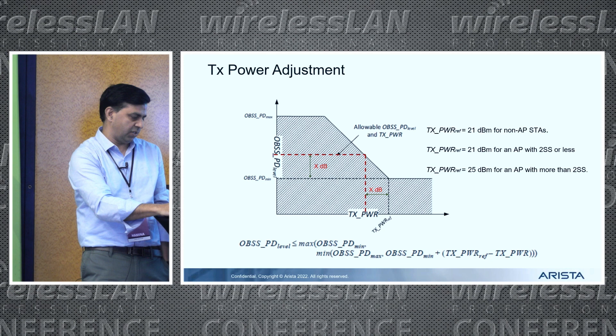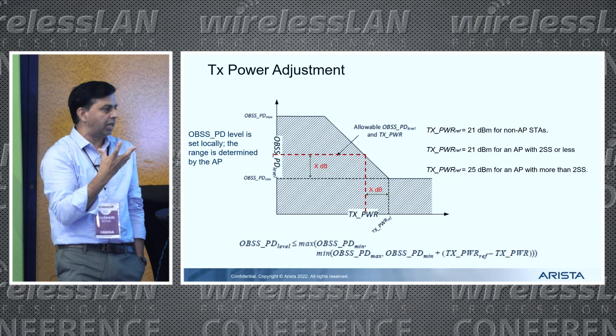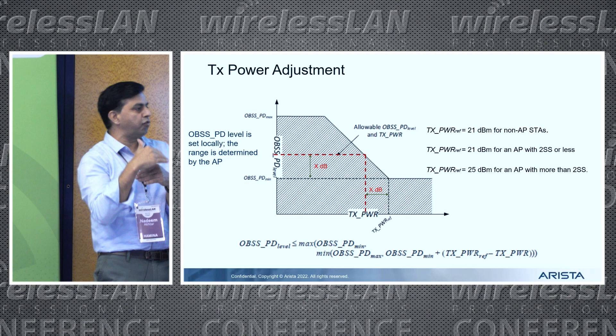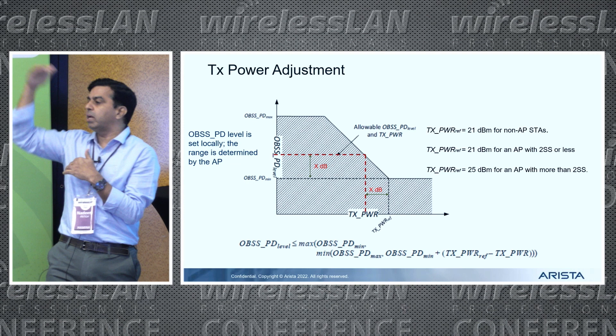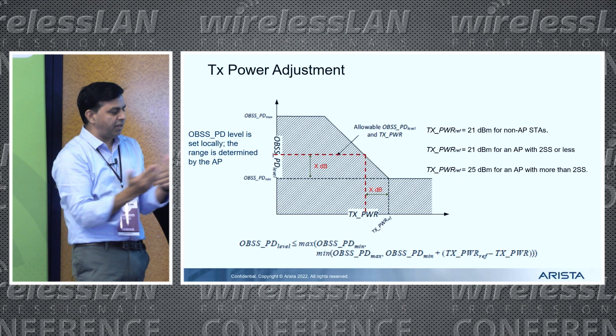The OBSS PD level is determined by each node within the BSS independently. However, the AP has to communicate to all stations what the minimum and maximum values are. The default per spec is minus 82 for minimum and minus 62 for maximum. If you receive a transmission above minus 62, you cannot do any SR. If you receive a transmission within those two bounds, you are eligible for SR depending on the PD level you choose, and you shift your power by the same amount.